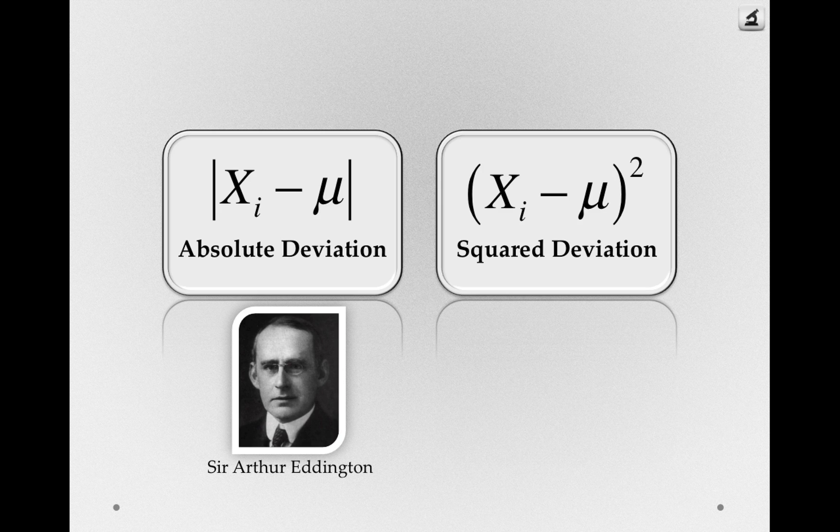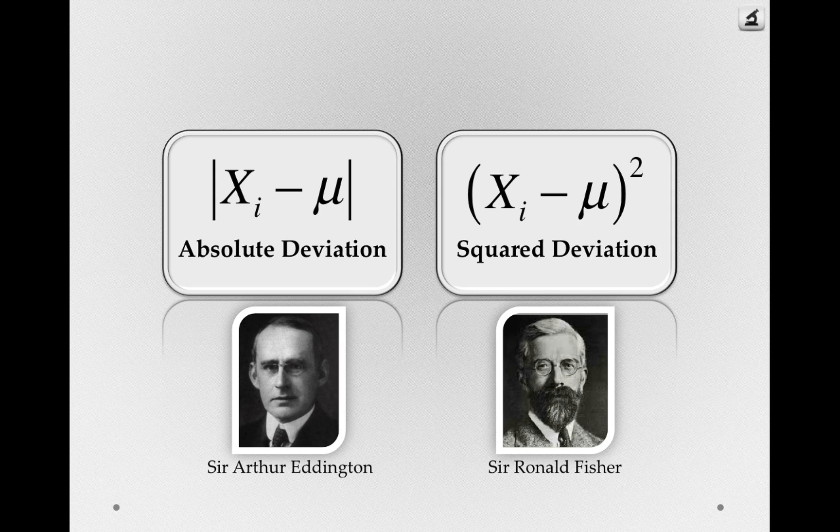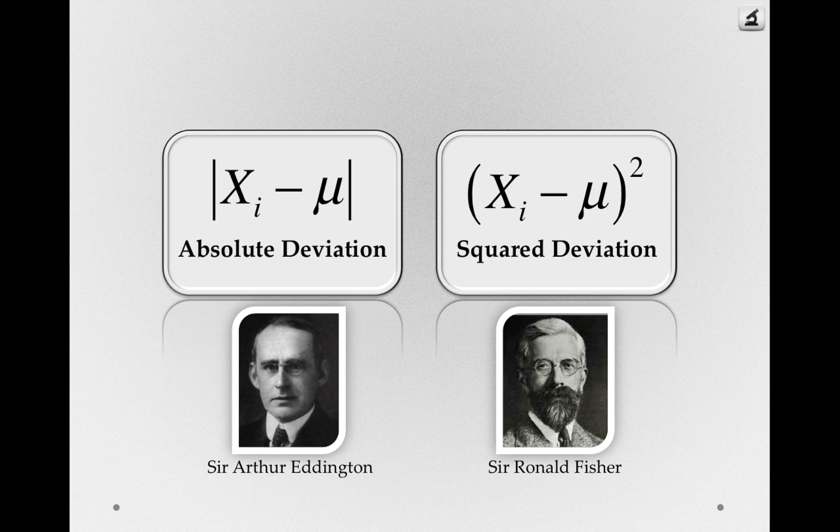Now this was argued for by someone else we've already met, Sir Ronald Fisher. Ronald Fisher being the most preeminent statistician in the 20th century, and Arthur Eddington not being a slouch himself, this turned out to be a pretty heated debate. Now it turned out that Fisher was right, as Fisher tended to be, and in 1920 he wrote a geometric proof for why we should use the squared deviation.